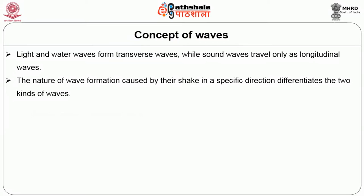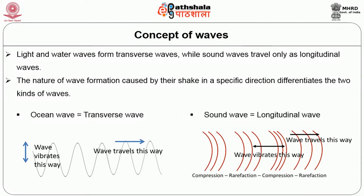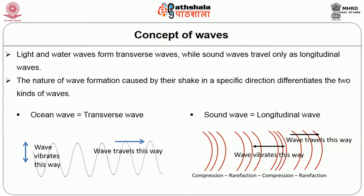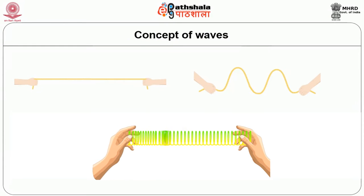Light and water waves are transverse waves while sound waves travel only as longitudinal waves. The nature of wave formation caused by their shake in a specific direction differentiates the two kinds. A wave shaking perpendicular to the movement direction is a transverse wave; waves which move parallel to movement direction are longitudinal waves. Take a piece of rope, hold on either end, stretch and shake it — you will see transverse wave formation. Take a spring, hold on both ends and pull it — you will see longitudinal wave formation.